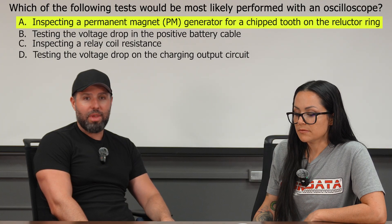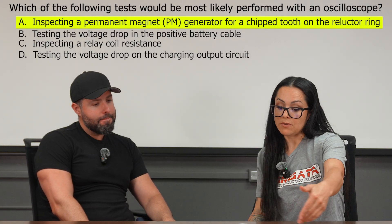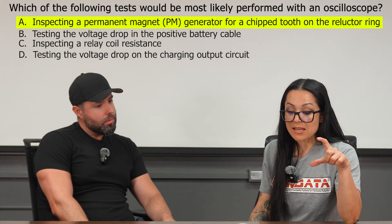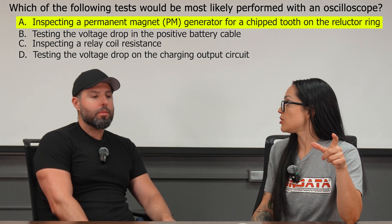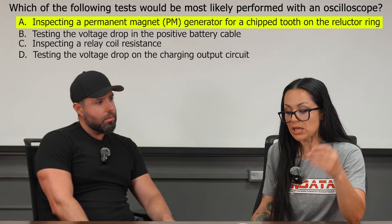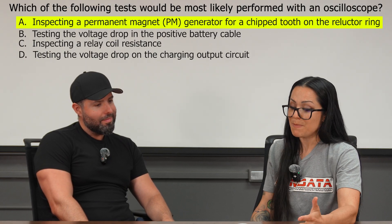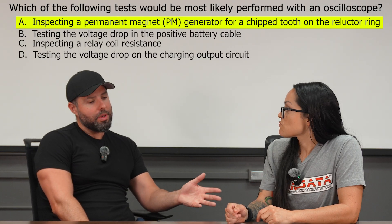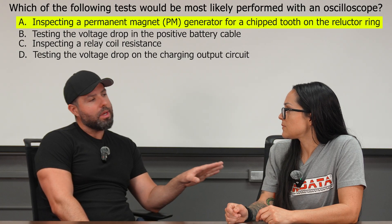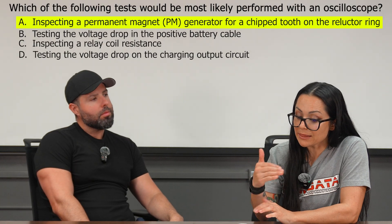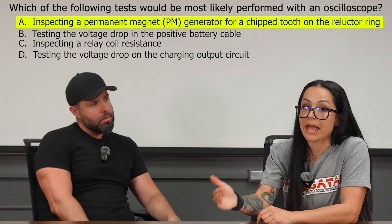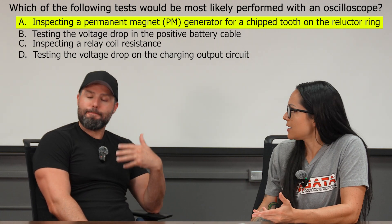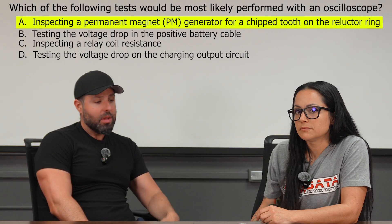The best answer here is A. And if you're not sure about A, process of elimination helps: B and D are testing voltage drop in cables or circuits — a multimeter handles that easily. C is inspecting coil resistance — you would never use an oscilloscope for that. Our oscilloscope is a voltage-over-time device. So even without fully understanding A, you can eliminate B, C, and D, leaving A as the answer.